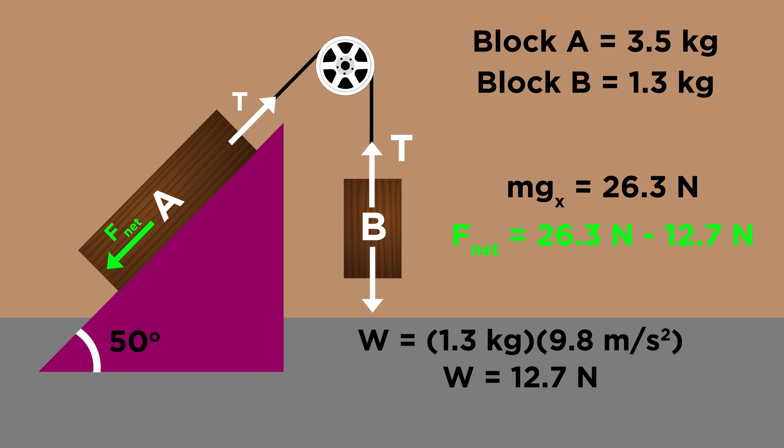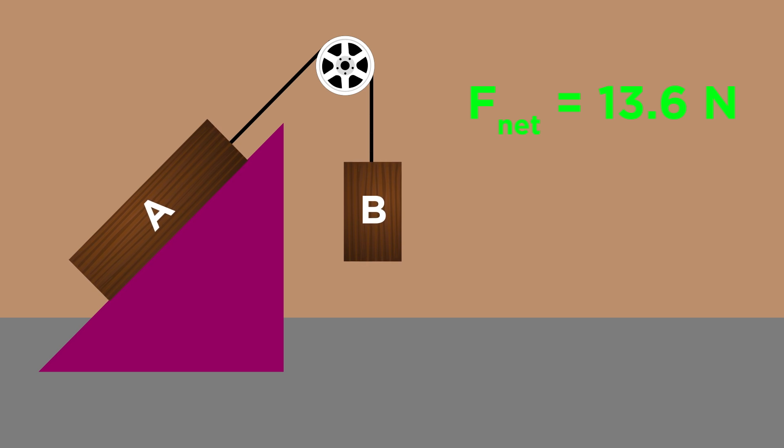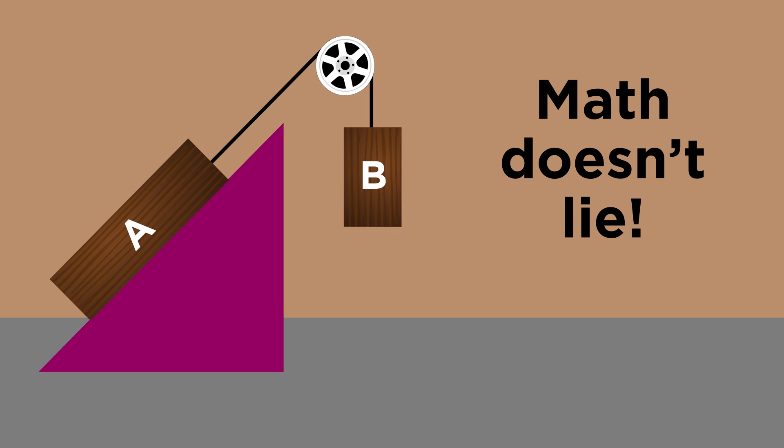26.3 minus 12.7 equals 13.6 newtons pointing in this direction, so that's the net force that will cause block A to slide down the ramp, thus pulling block B upwards. And that's what will happen. Remember, math doesn't lie.